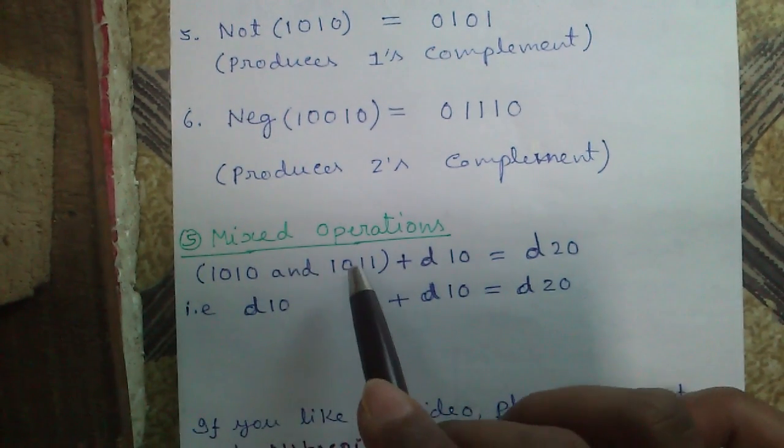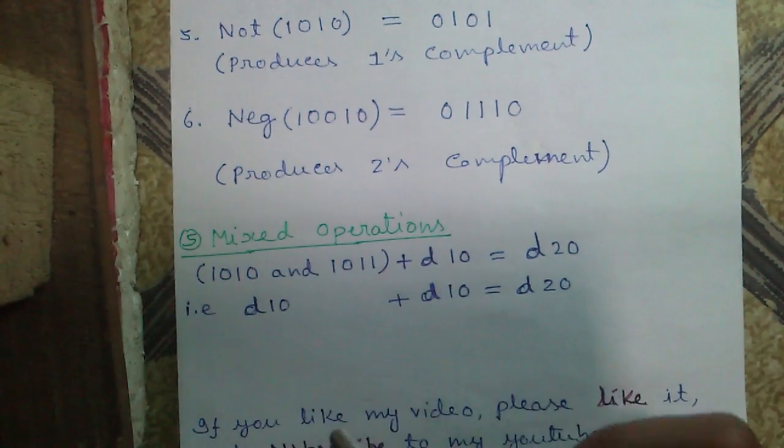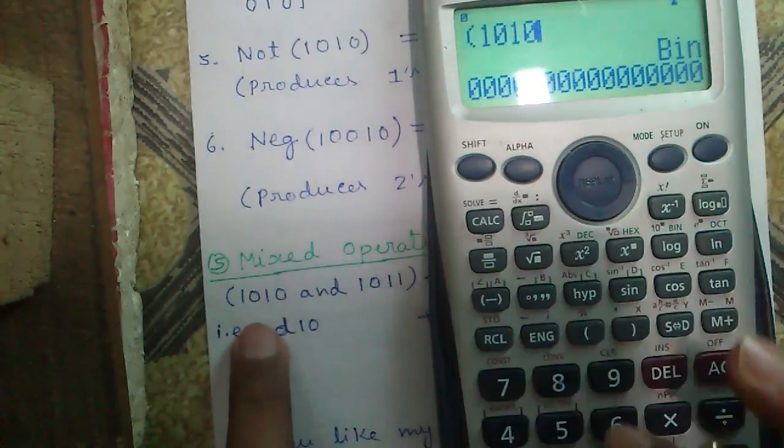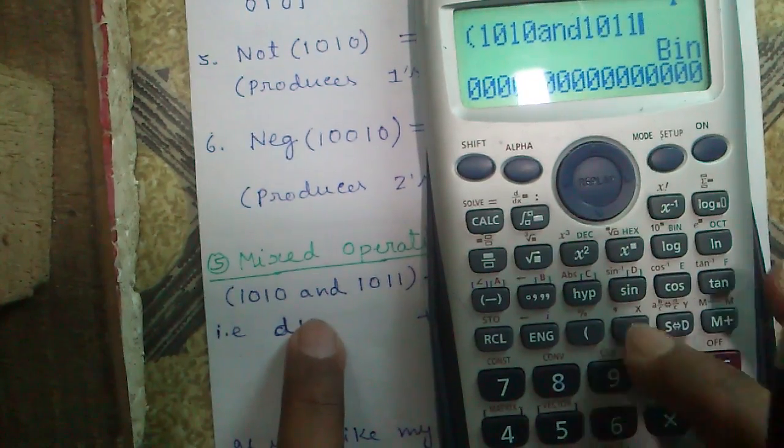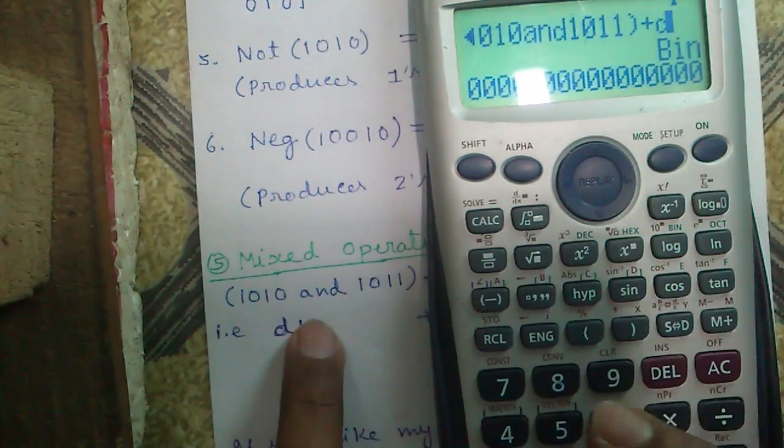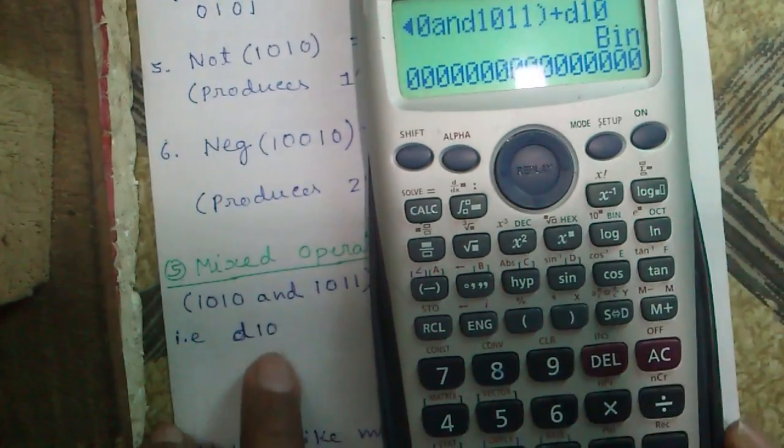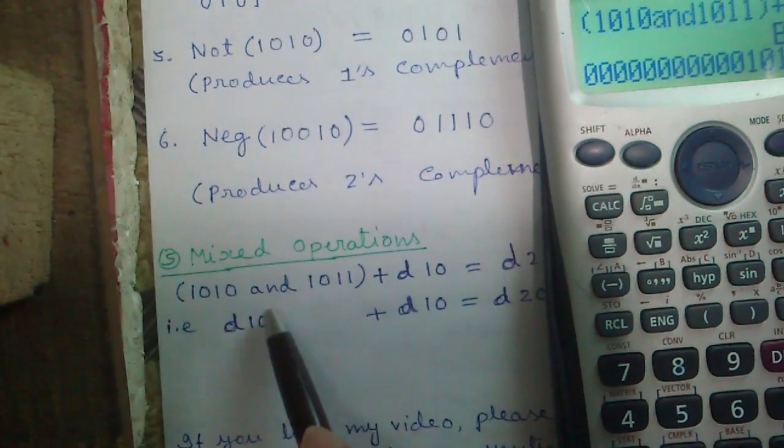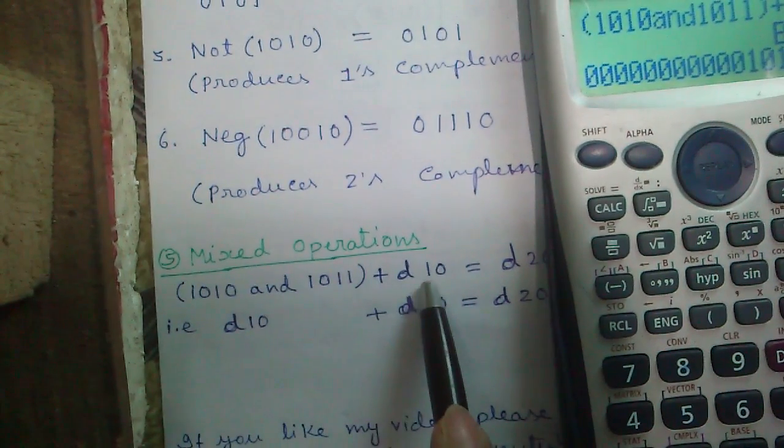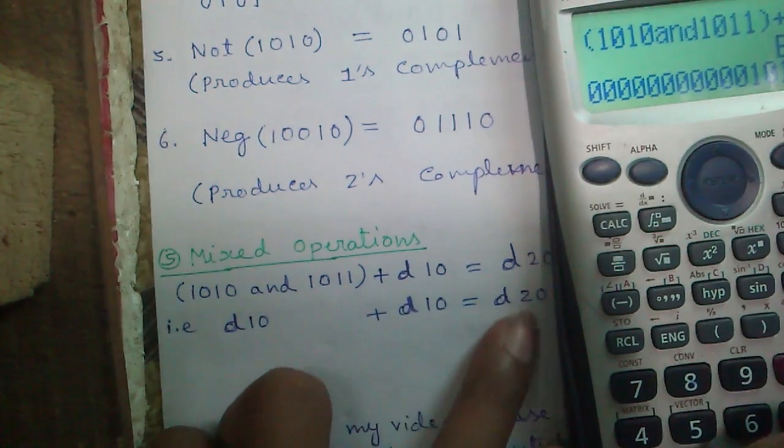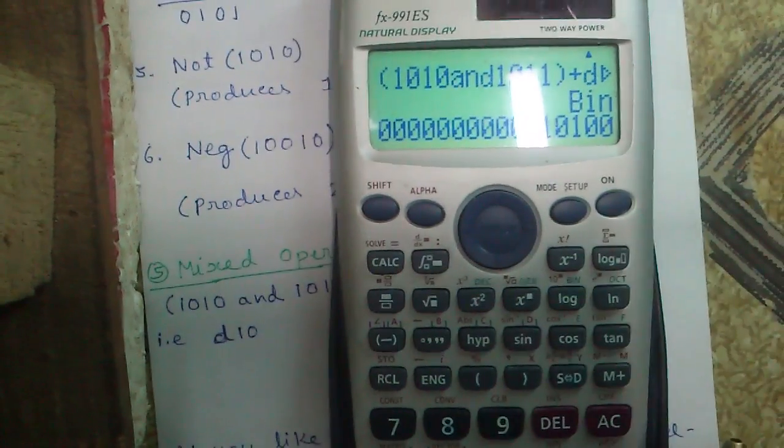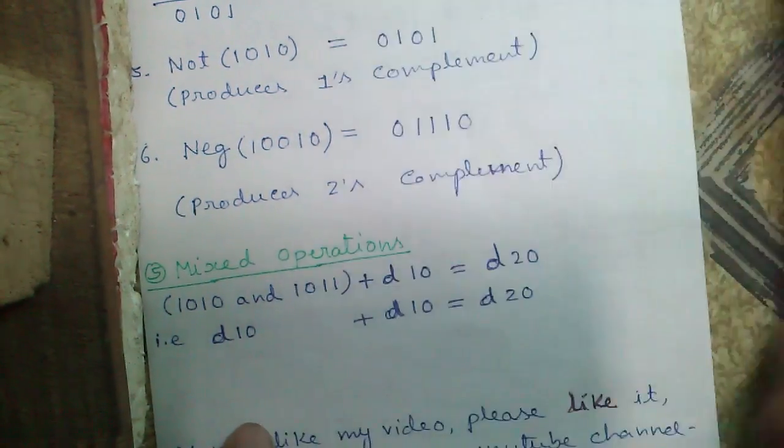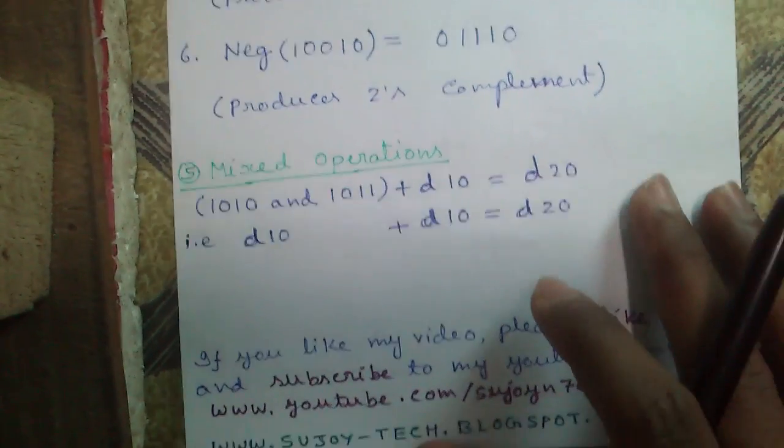Now, other than the arithmetic and logical operations, you can perform mixed operations. This is the logical part. This will produce 1010, that is 10 in decimal. And we are adding another 10 with that. So, it will be 20 in decimal. Press destination, so it will become decimal 20. You can perform your own mixed operations as you desire.